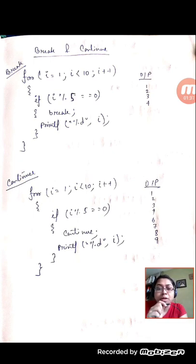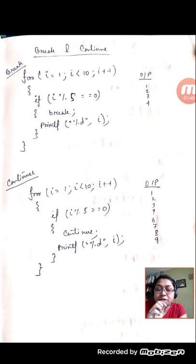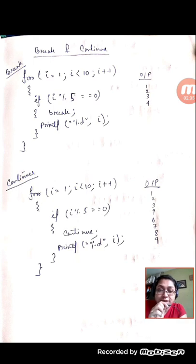After the value of 4, i will never be executed again. So the loop executes a total of 5 times for i = 1, 2, 3, 4, 5, but the value is only printed up to 4. This is because the printf statement is placed after the break statement, not before it. If the printf were before the break statement, then the value 5 would also be printed.